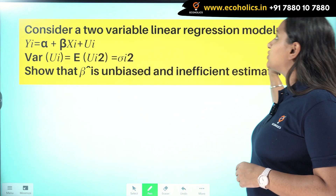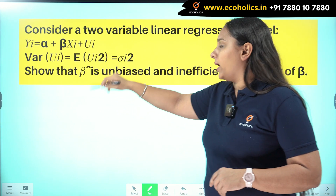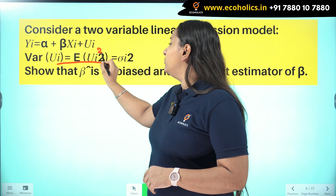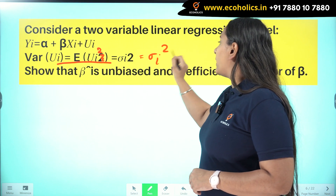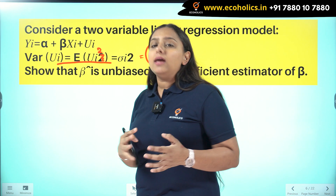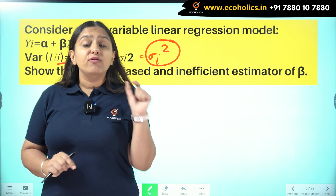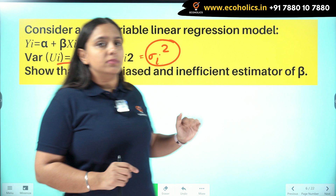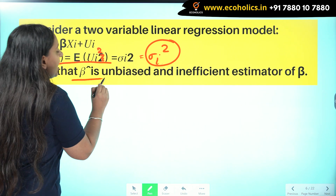The model is yi equals alpha plus beta xi plus mu i, where variance of mu i equals the expected value of mu i squared, which equals sigma i squared. The presence of i in sigma tells us there is heteroscedasticity — hence the variance of the error term is not constant.